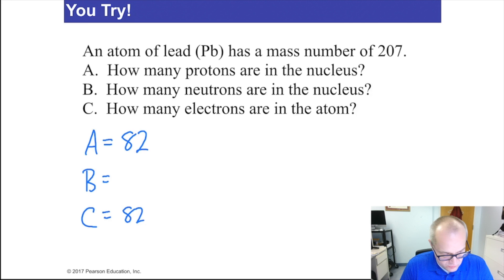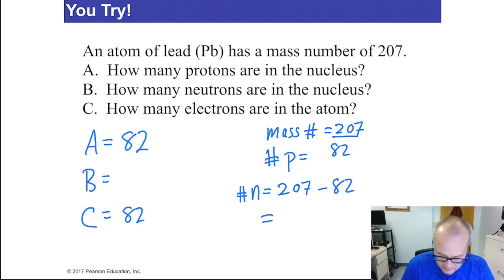The number of neutrons, we have to work carefully here. We know that the mass number equals 207. Number of protons equals 82. So number of neutrons equals the mass number minus 82, or 125 is the number of neutrons. Protons are 82, electrons are 82, neutrons are 125. Now if you didn't get that right, go back and try again. This is a very simple question. Make sure you can do it.